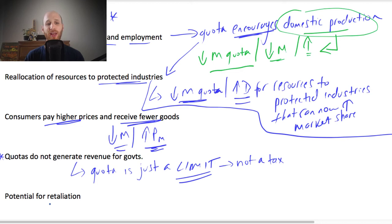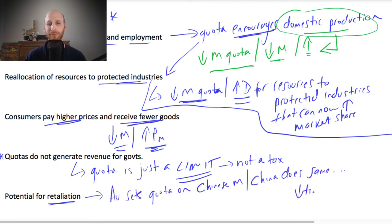The final point is that there's the potential for retaliation with quotas. So if we set a very low quota for imported goods from one country, then they might get annoyed and set a quota on goods from our country. So it could be kind of like that tit for tat effect, where quotas will beget quotas in other countries. So Australia sets a quota on Chinese imports, China does the same, and the overall effect is to reduce the benefits of trade across the economies, even across the world economy too.